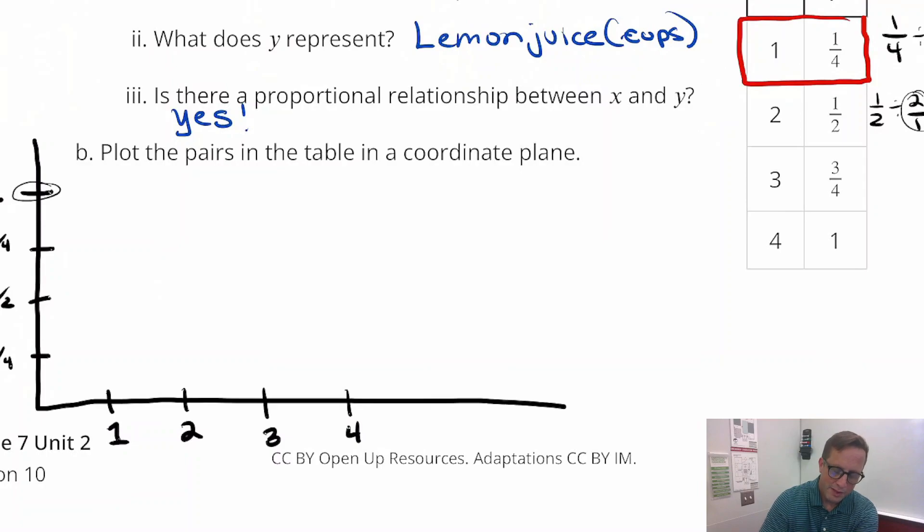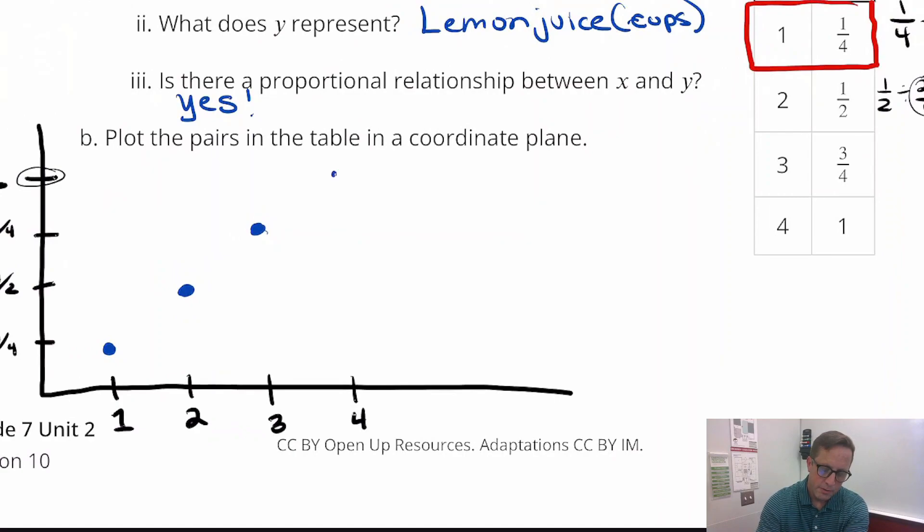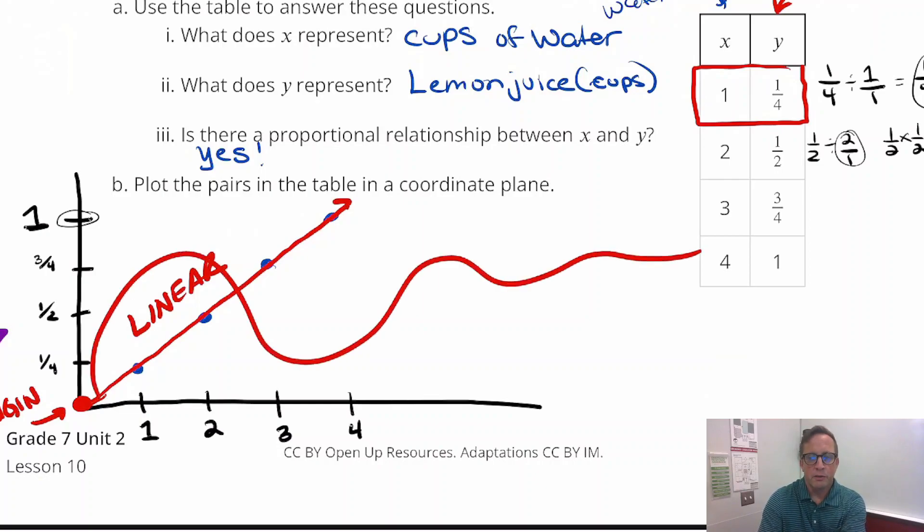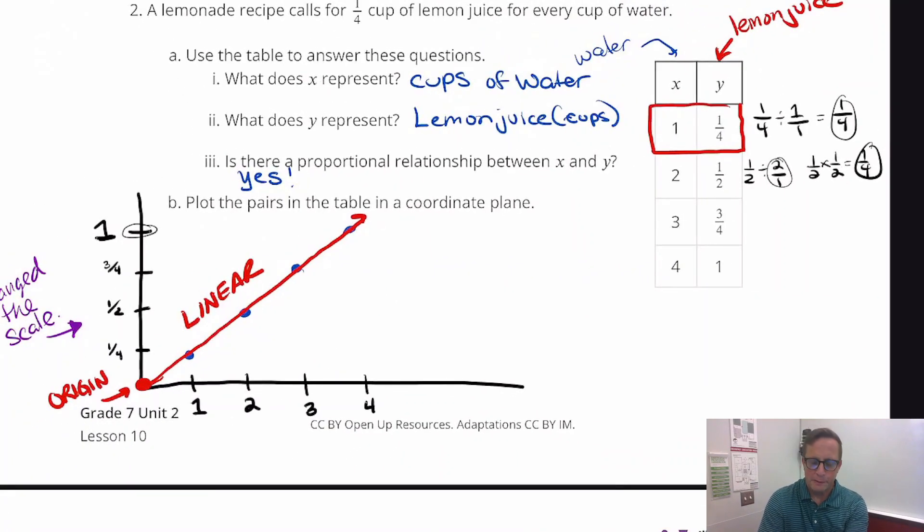So one and one-fourth, and this is not going to look perfect because I just drew this by hand. But there's one and one-fourth, and then two and one-half is going to look right there. Three and three-fourths is going to be right about there, and four and one is going to be right about there. Yeah, it wasn't too bad I don't think. That's definitely linear. It's linear because it's straight and it begins at the origin. It must be both of those things. It cannot be linear but start anywhere else, or it can start at the origin but be all curvy and stuff. No, it's got to be linear and begin at zero, zero.